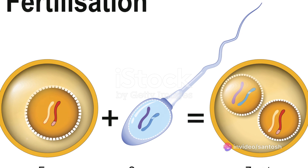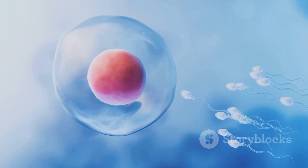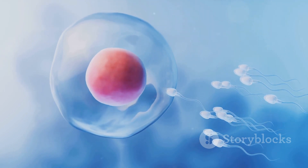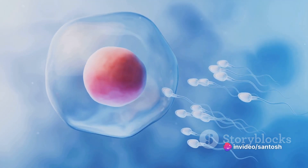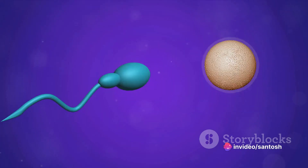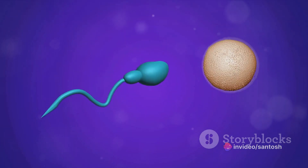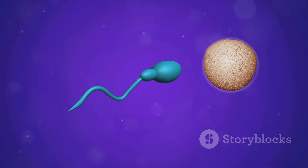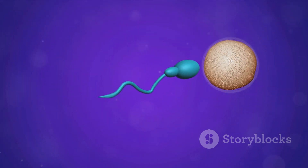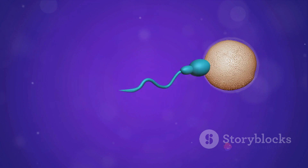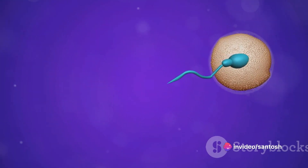First, we delve into the marvel of fertilization. This is the stage where it all begins, when a sperm cell from the father unites with an egg cell from the mother. This fusion forms a single cell known as a zygote, marking the genesis of a new life. The zygote possesses all the genetic information necessary to form a new individual — it's a fascinating dance of nature, where two halves come together to create a whole.